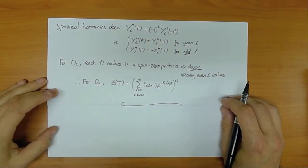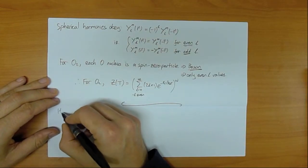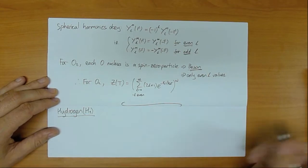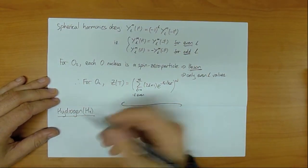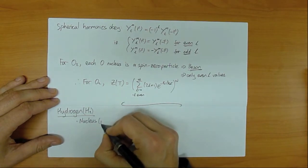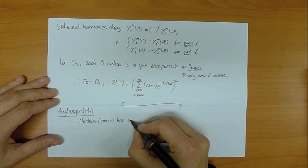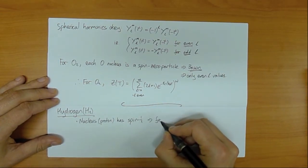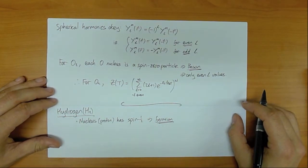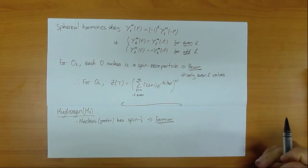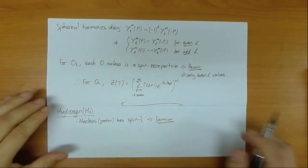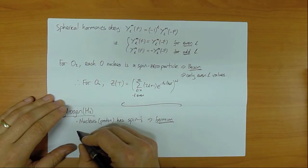I'm going to do the example of hydrogen to talk about this in more detail. The hydrogen nucleus is just a proton, which is a spin-1/2 particle and therefore behaves like a fermion. So that means the wave function must be antisymmetric under the exchange of particles.